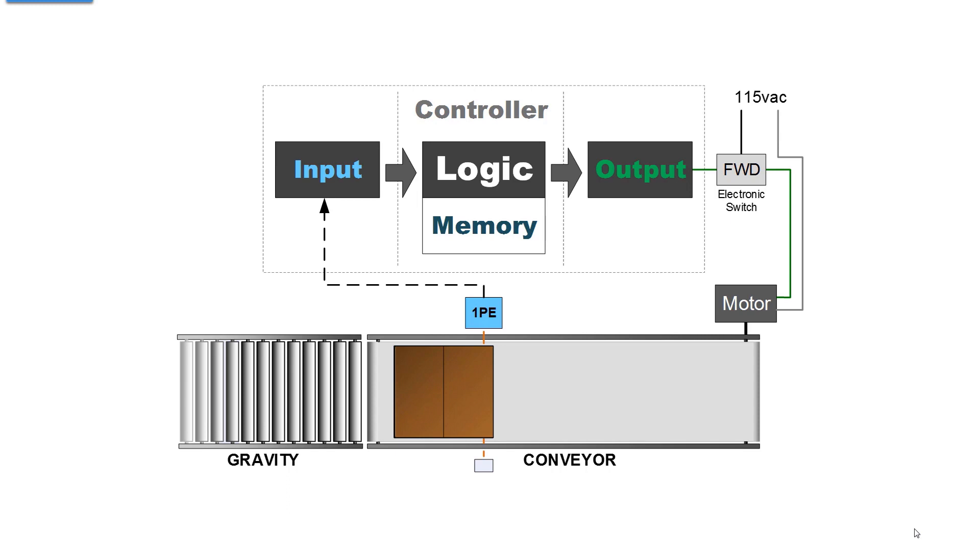The output from the photo sensor to the controller is binary: something is blocking or not blocking, 0 or 1, 0 volts or 24 volts DC. The current logic is limited to running the conveyor forward until the photo eye is blocked by an object.